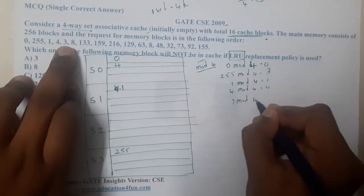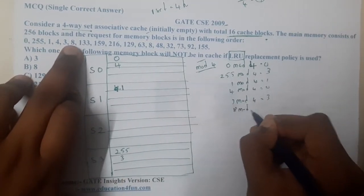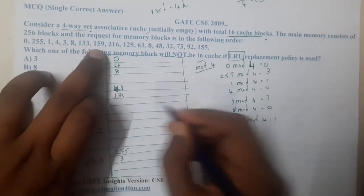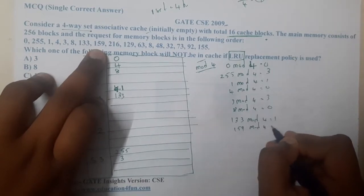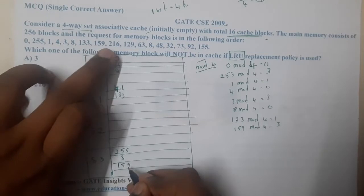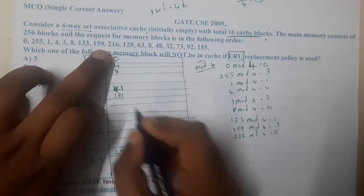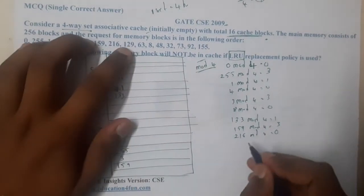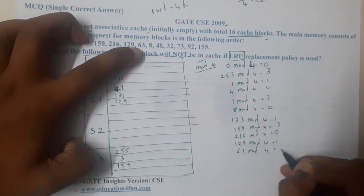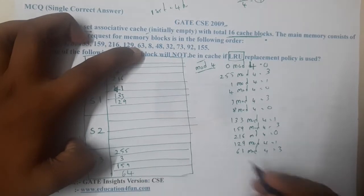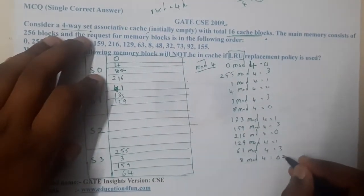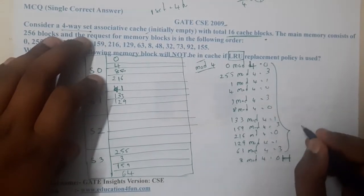Similarly, 133 mod 4 is 1, so you will get 133 here. Similarly, 159 mod 4 is 3. Then 216 mod 4 which is 0, so you will get 216 here. So luckily set 0 has been completely filled, right? Similarly, 129 mod 4 which is 1, so 129 will come here. Similarly, 63 mod 4 is 3, so 63 will come here. Wow, yes, set 3 is also full now. 8 mod 4 is 0. Luckily, 8 is in its slot already, so this is a hit guys.